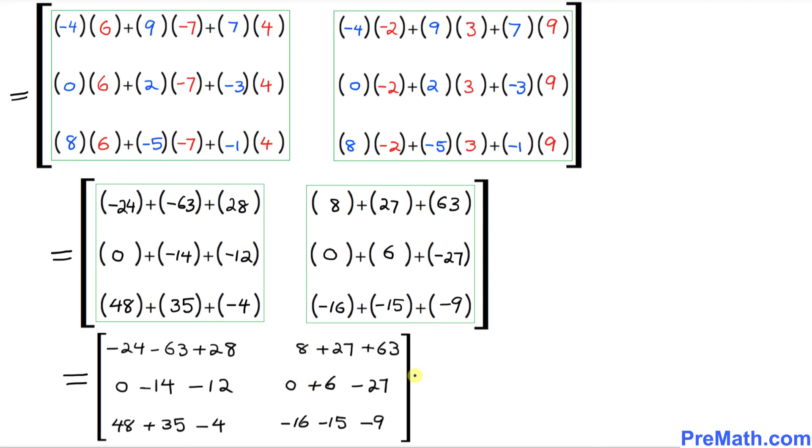Now, the next step is, I want you to just simply add and subtract. So we are going to write down, this is going to be our matrix that has these numbers. When you add and subtract negative 24 minus 63 plus 28, that is going to give you negative 59.